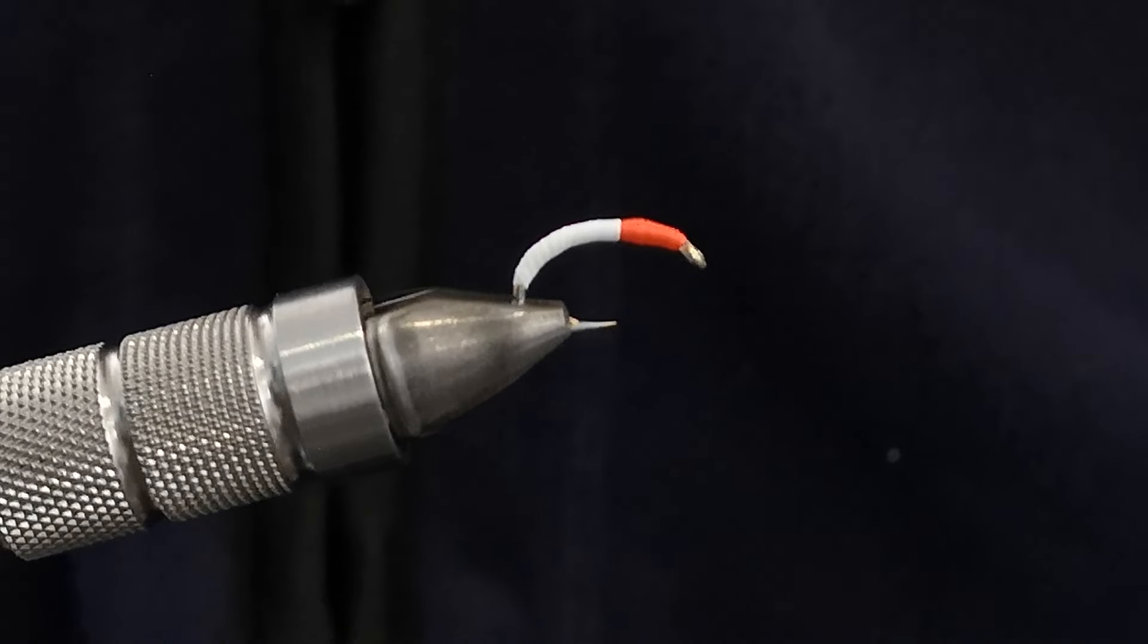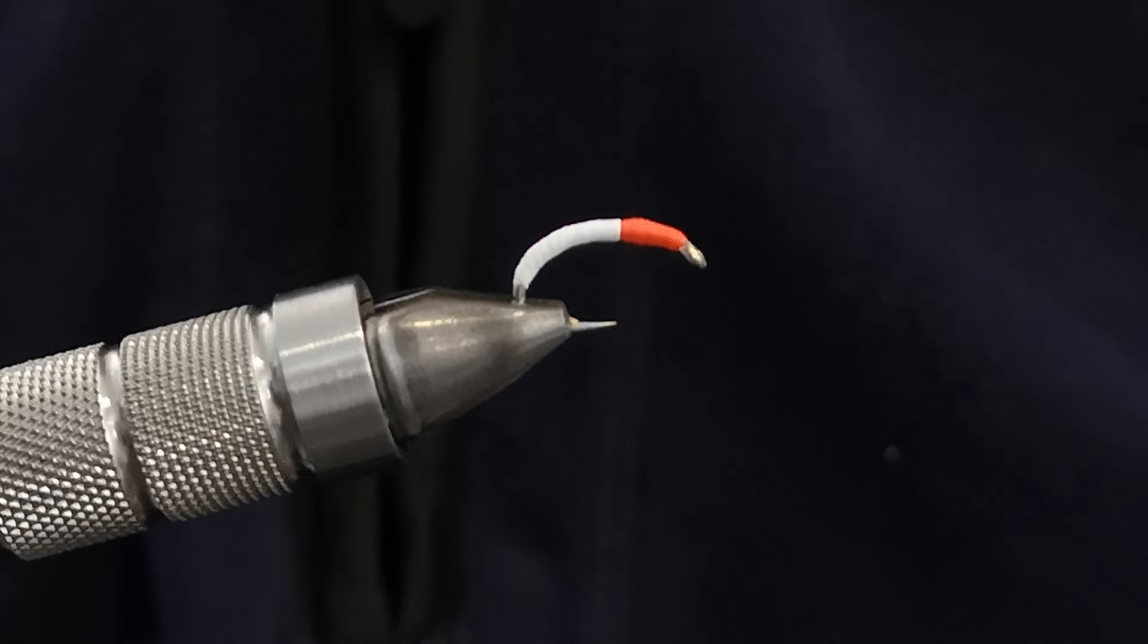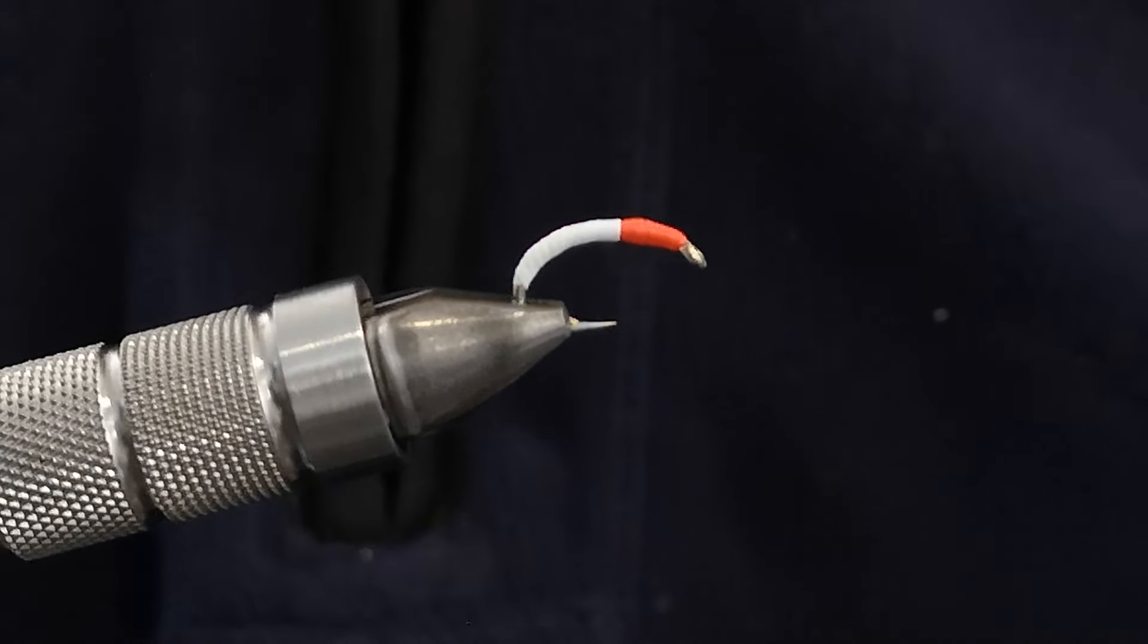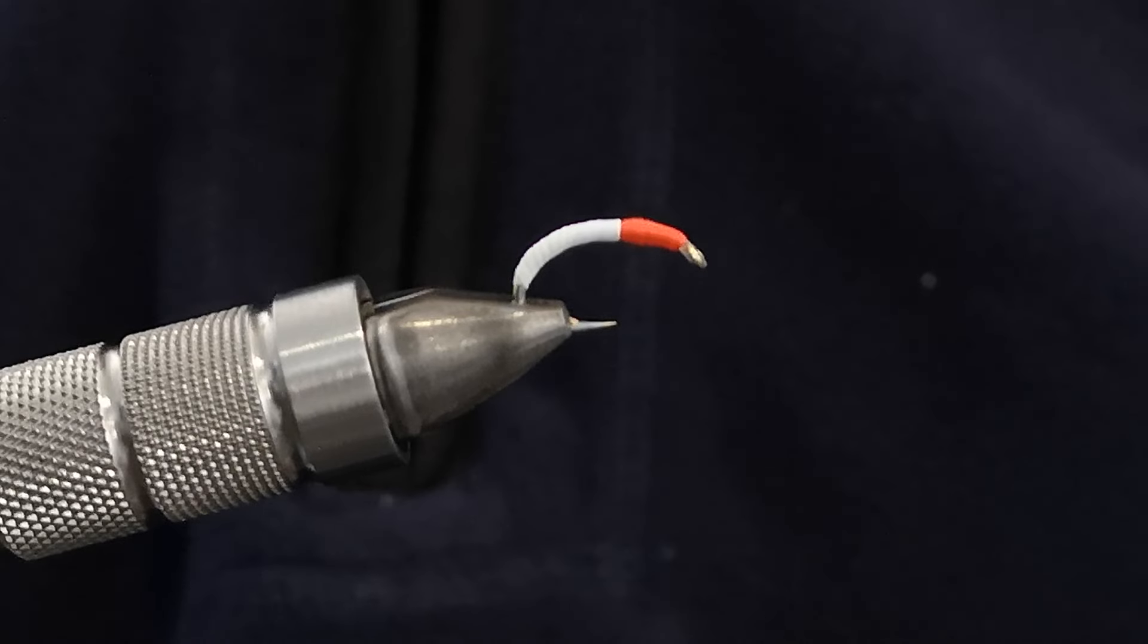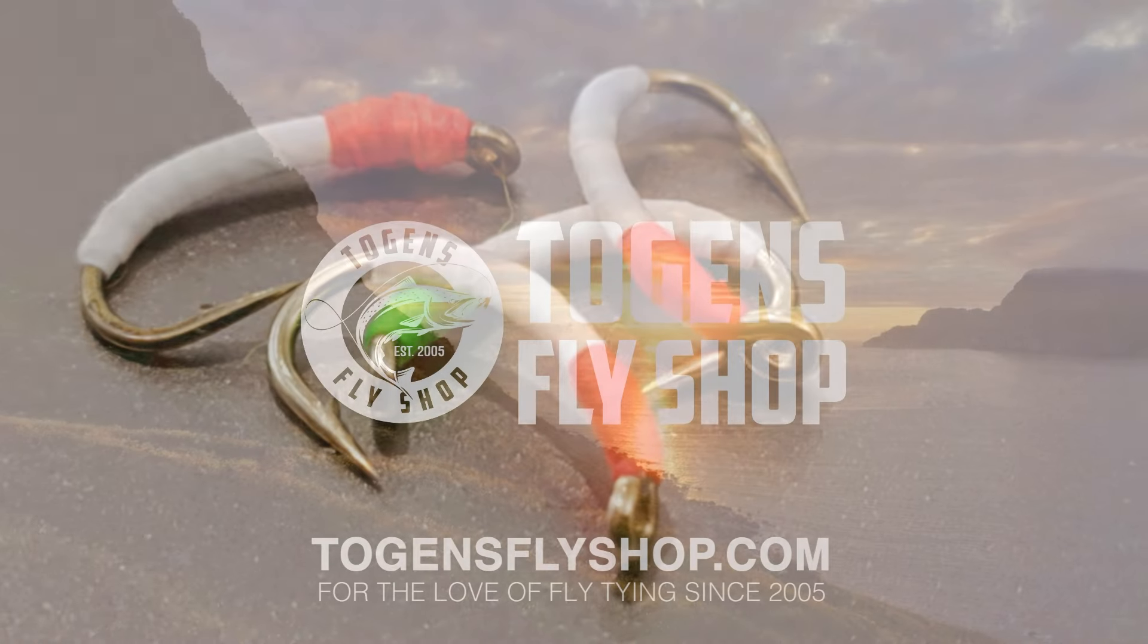That's it. The okey dokey buzzer. As I say, try different colours. If you can get hold of plumber's tape, use plumber's tape. The colour of it, it's shiny. The texture is amazing. If you can't, then just use some white thread. But give it a go. I don't think you'll be disappointed. Tight lines. See you next time.